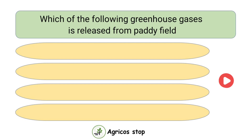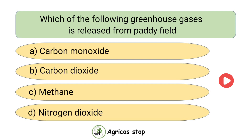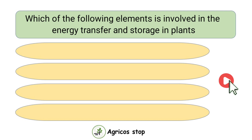Which of the following greenhouse gases is released from Paddy Field? Options are Carbon Monoxide, Carbon Dioxide, Methane, and Nitrogen Dioxide. The answer is Methane. Methane is the greenhouse gas released from Paddy Field.